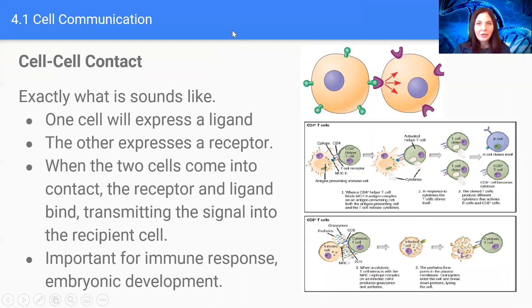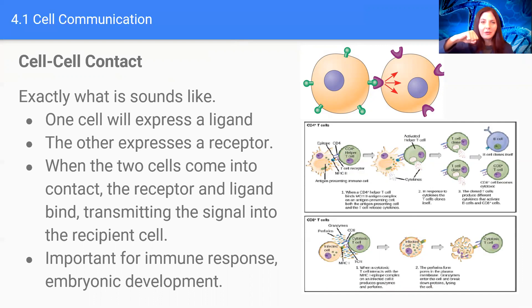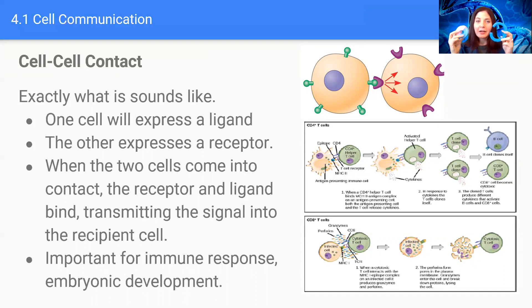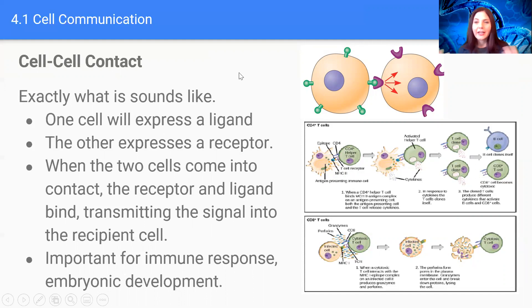In cell-to-cell contact, one cell will express a ligand or signaling molecule and the other expresses a receptor and they bind together. Similarly to how an enzyme binds with a substrate, the ligand binds with the receiving protein, causing a slight conformational change, and that will relay the signal until eventually a response occurs. This is a very important type of cell communication for immune responses as well as embryological development and stem cells in adults.